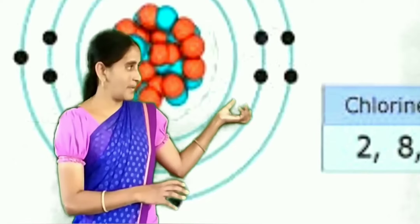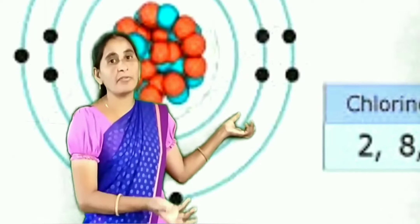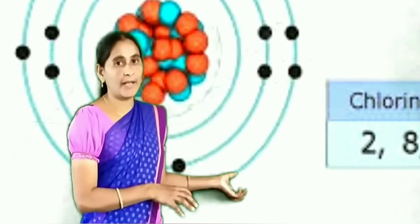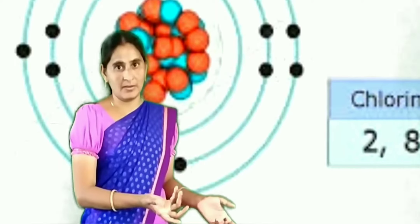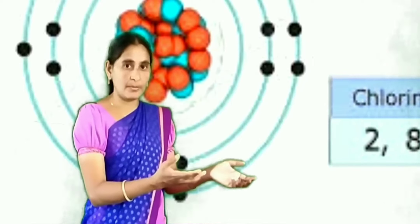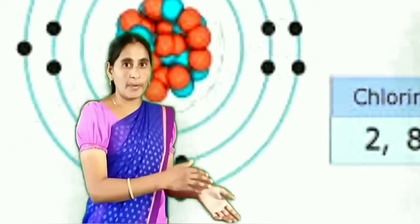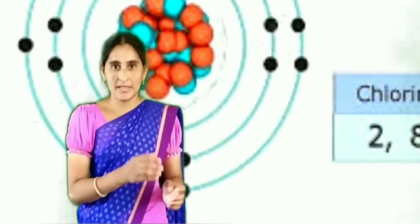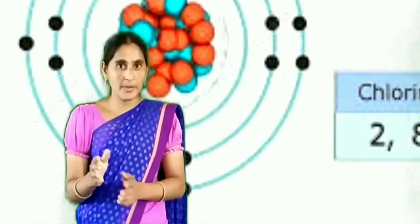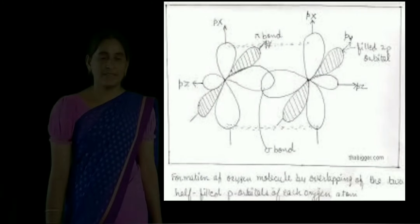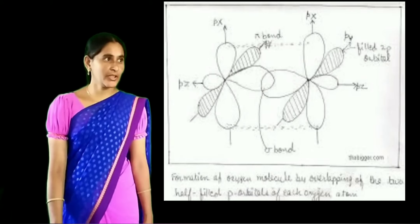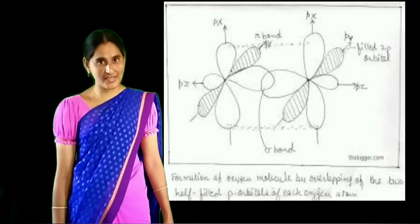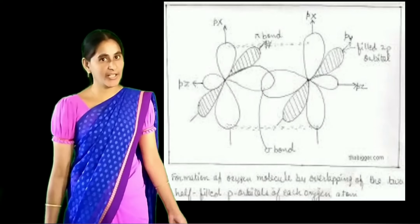This is explained by the electronic theory of valence given by Lewis and Kossel. But it has failed to explain the repulsion between lone pair and bond pair. That was explained by VSEPR theory — Valence Shell Electron Pair Repulsion theory. Very important questions from this lesson are double bond formation in oxygen and triple bond formation in nitrogen.